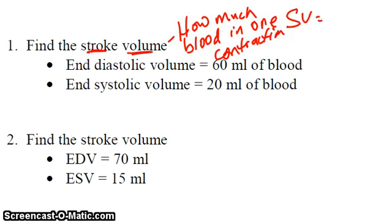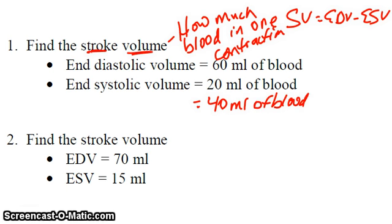is EDV minus ESV, end diastolic volume minus end systolic volume. So 60 minus 20 would be 40 ml of blood. In this patient, their stroke volume is 40.